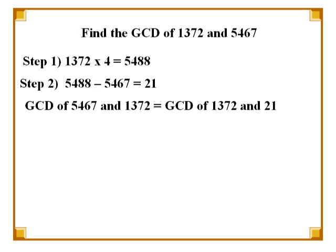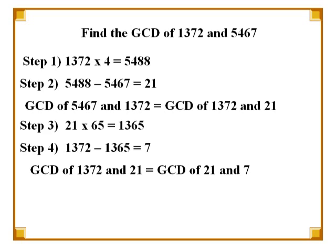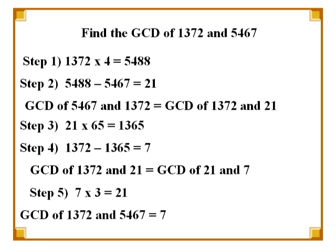We now proceed to find the greatest common divisor of 1372 and 21. We multiply 21 by 65 to get 1365. In the next step, we subtract 1365 from 1372, which gives us 7. We now find the greatest common divisor of 21 and 7. We know that 7 times 3 is 21, so the greatest common divisor of 21 and 7 is 7. Therefore, the greatest common divisor of 1372 and 5467 is 7.